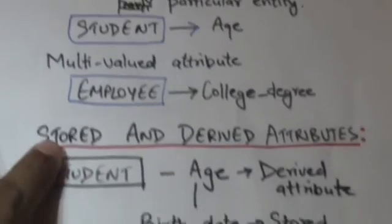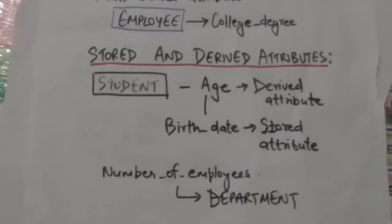Next is stored and derived attributes. The attribute whose value can be derived from the values of other related attributes or entities is called derived attribute. For example, the value of age attribute of a student entity can be determined from today's date and the value of birth date attribute of student entity. Therefore, age attribute is a derived attribute. In this case, attribute birth date is called stored attribute.